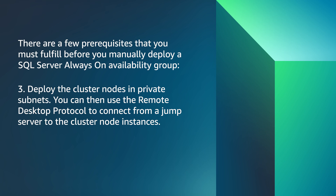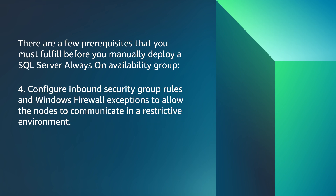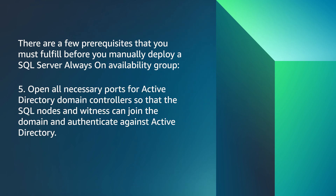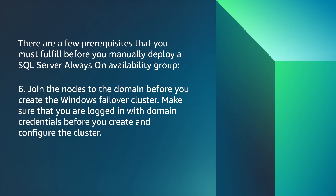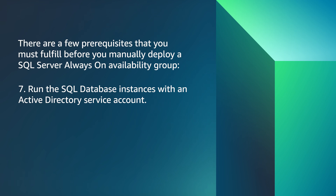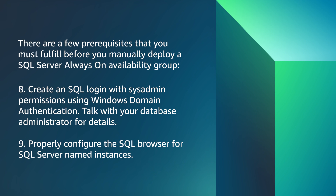Deploy the cluster nodes in private subnets. You can then use Remote Desktop Protocol to connect from a jump server to the cluster node instances. Configure inbound security group rules and Windows Firewall exceptions to allow the nodes to communicate. Open all necessary ports for Active Directory domain controllers so that the SQL nodes and witness can join the domain and authenticate against Active Directory. Join the nodes to the domain before you create the Windows Failover Cluster. Make sure you are logged in with domain credentials before you create and configure the cluster. Run the SQL database instances with an Active Directory service account, and create a SQL login with sysadmin permissions using Windows domain authentication. Properly configure the SQL Browser for SQL Server named instances.